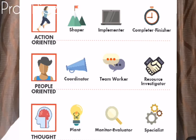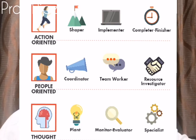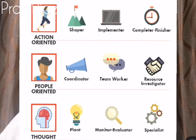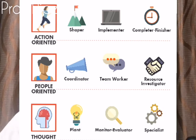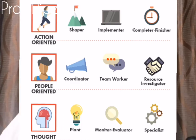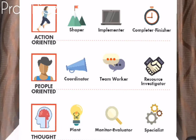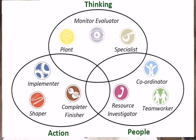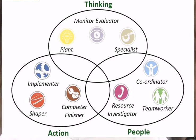The third people role is the Resource Investigator, who knows exactly what resources to get and identifies the talent of each person — who knows accounting, who is creative, who has communication skills. So in summary: thinking roles include the Plant, Specialist, and Monitor Evaluator; action roles include the Implementer, Shaper, and Completer; people roles include the Coordinator, Team Worker, and Resource Investigator.